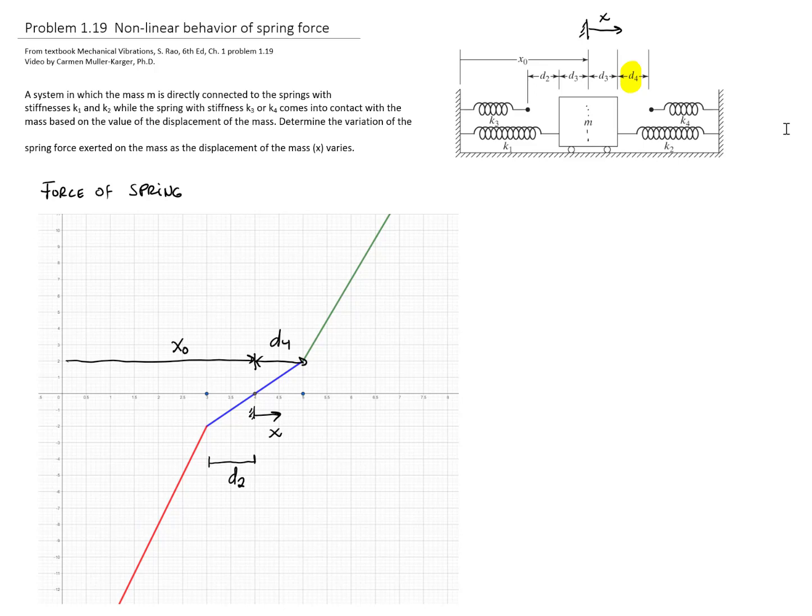Regarding the slope here, the slope of this section of the curve will be k1 plus k2. And the slope for this section of the curve will be k1 plus k2 plus k4. And the slope for this section will be k1 plus k2 plus k3.